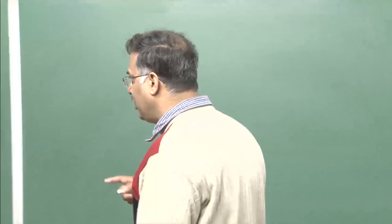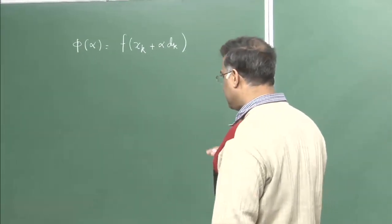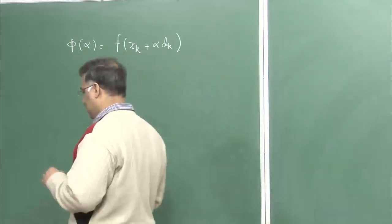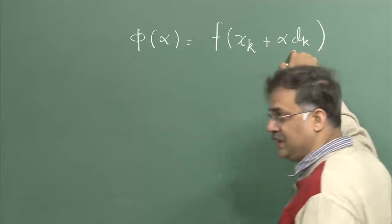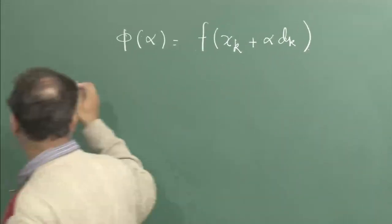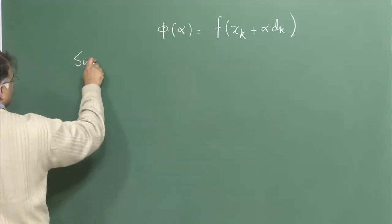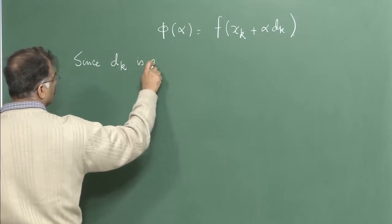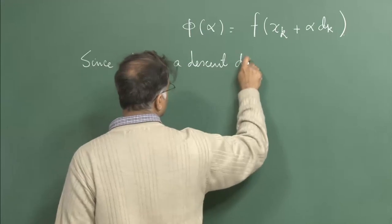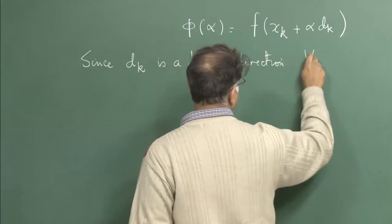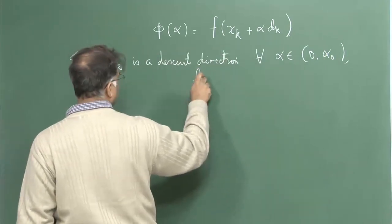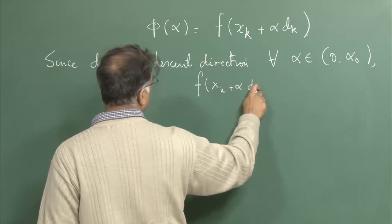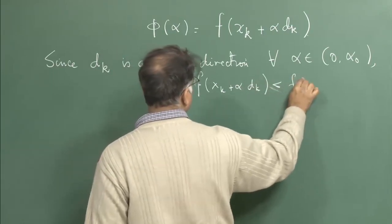We know that f(x_k) is not the minimizer, which means in the neighborhood of that point x_k there is a point where the function value is better — that is, lesser. In the sense, along the direction d_k the function value is actually decreasing. So for certain alpha between 0 and alpha_0, since d_k is the descent direction, f(x_k + alpha * d_k) is strictly less than f(x_k).